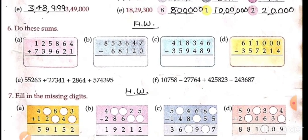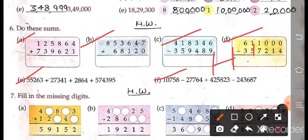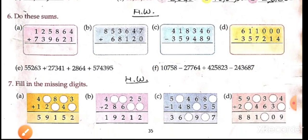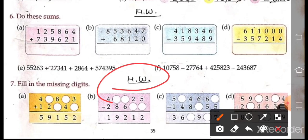Now question number 6: simple addition and subtraction — these questions you have to do in your homework. And question number 7: write the missing number — this is also your homework.